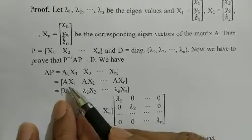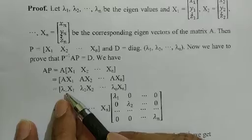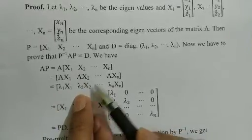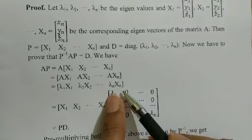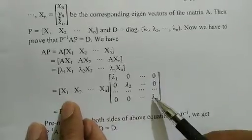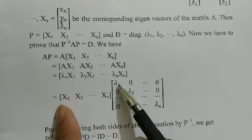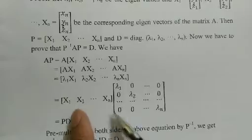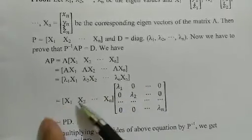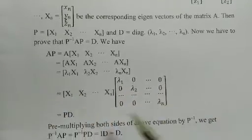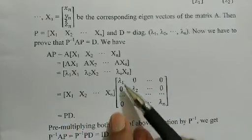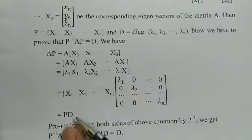Because corresponding to eigenvalue λ1, the eigenvector is X1, so A·X1 = λ1·X1. Similarly A·X2 = λ2·X2, and so on up to A·Xn = λn·Xn. We substitute these in, and then decompose this matrix into another matrix. If we multiply these two together, we get back the same result: X1·λ1 + 0 + ... = X1·λ1, and similarly for all others. So we get matrix P times diagonal matrix D.